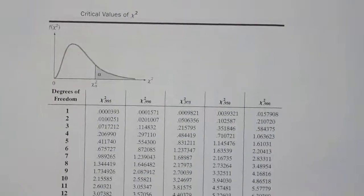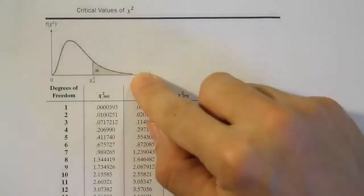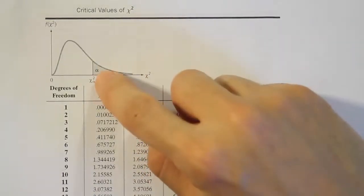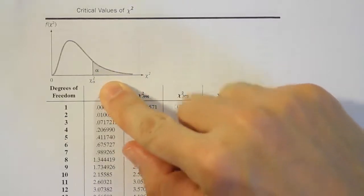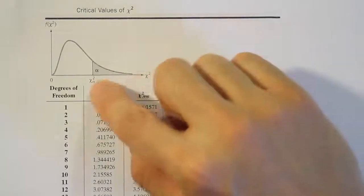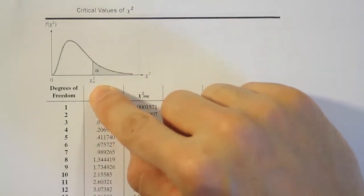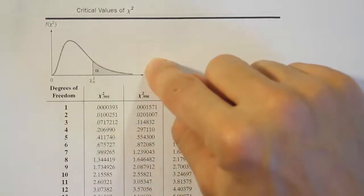Let's take a closer look at our chi-squared critical value table. The table has a right tail shaded in the drawing with alpha in the tail, and chi-squared alpha at the bottom. What this tells us is that the subscript represents the amount of area in the right side of the table beyond that chi-squared value on the number line. So if there's alpha as a subscript, there's alpha area in the tail.